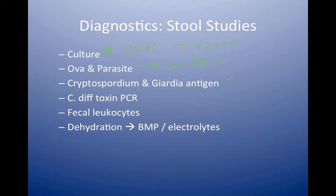For C. diff, the test of choice is a C. diff toxin PCR. This is very sensitive, so it shouldn't be ordered in the absence of the patient having diarrhea and should not be used as a test of cure. Fecal leukocytes are often ordered as part of the workup for diarrhea — this looks for inflammation in the stool.